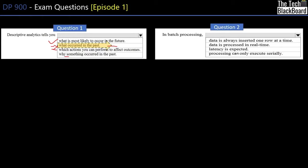Our second question is related to batch processing. Let's understand what kinds of processing we have. The first is batch processing and the second is real-time processing. The core difference is that batch processing processes data in chunks or batches, while real-time processing processes data as and when it comes — records are processed as they arrive.